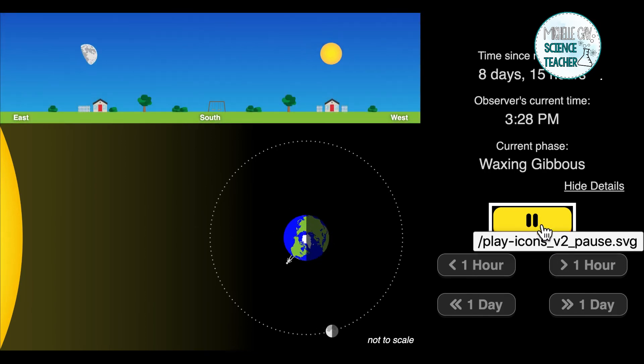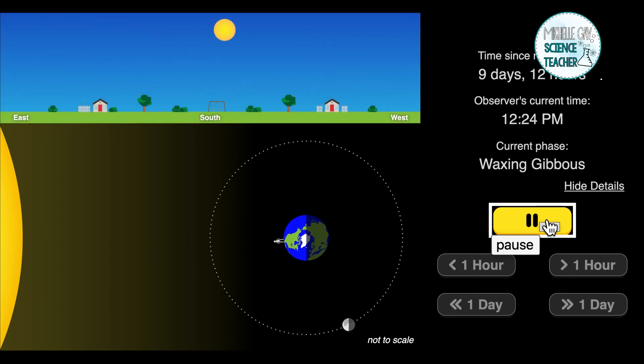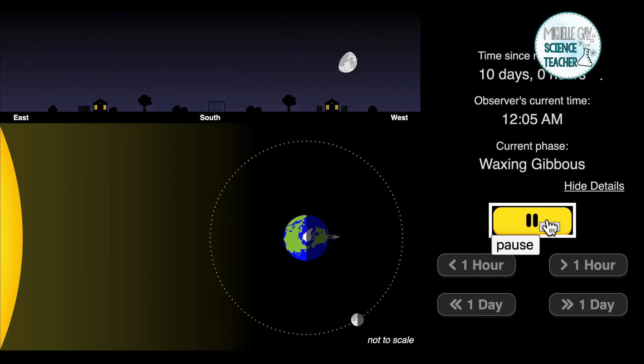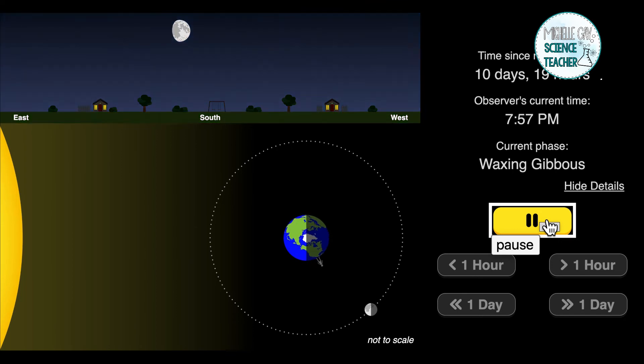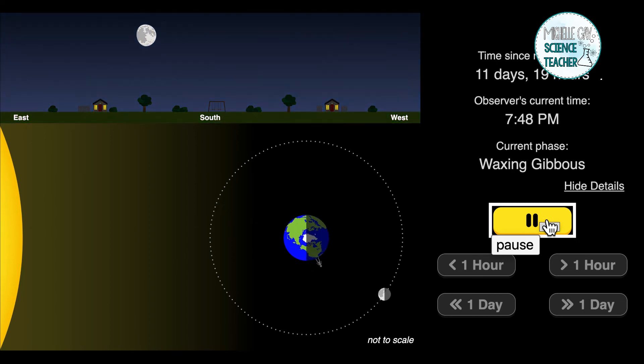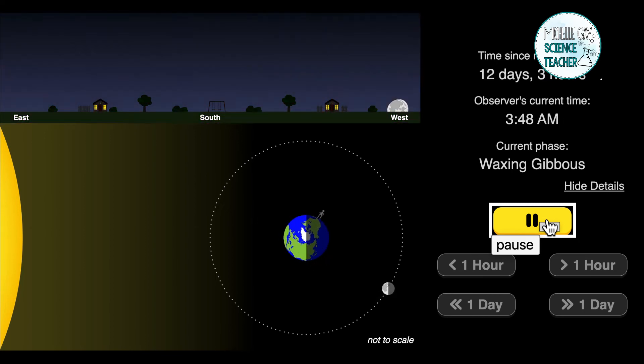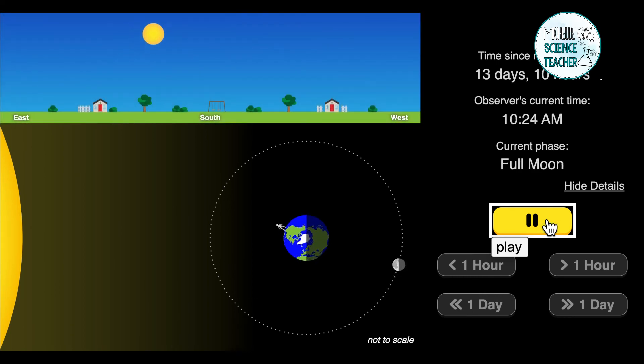As it continues, it will continue to illuminate and we will begin to see more of the moon. We have the waxing gibbous and this will take us back to the full moon.